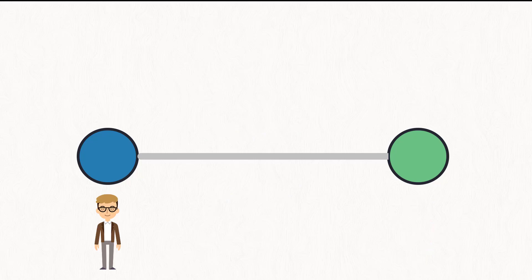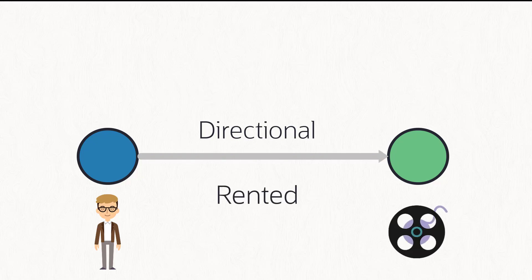On the other hand, we also have directional edges. Here, we have David who has rented a movie — but a movie cannot rent David. This wouldn't make sense, which is why this case is directional.